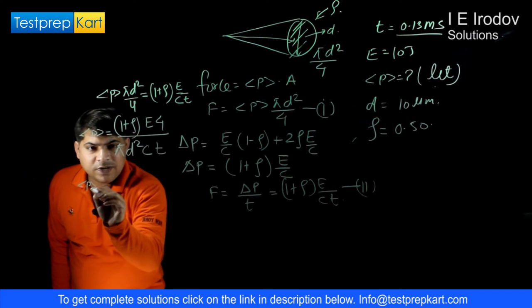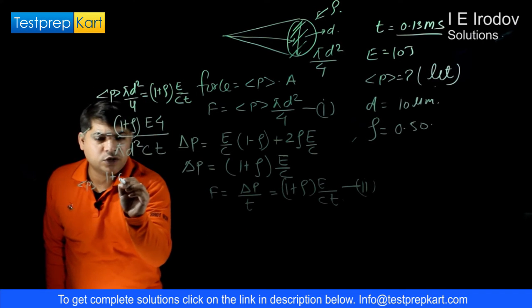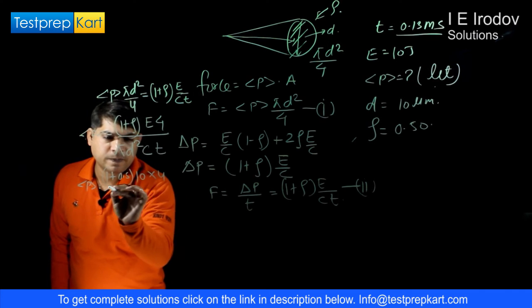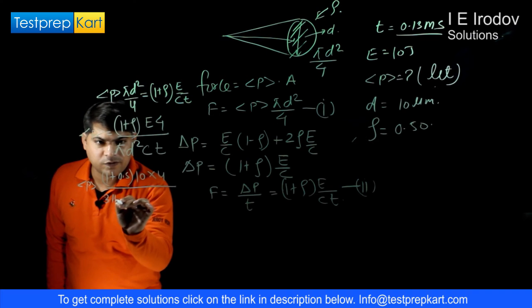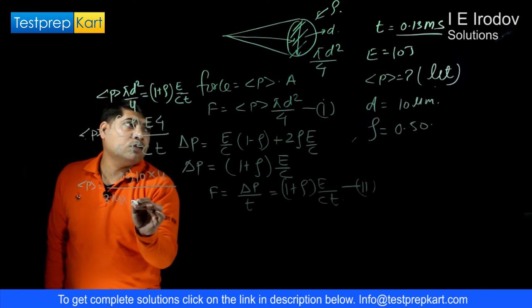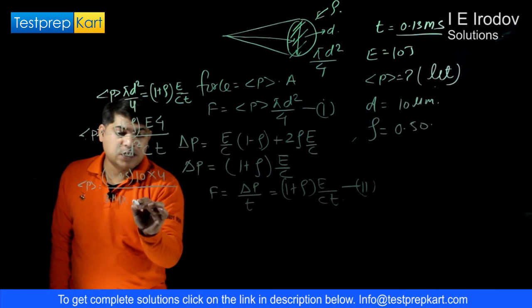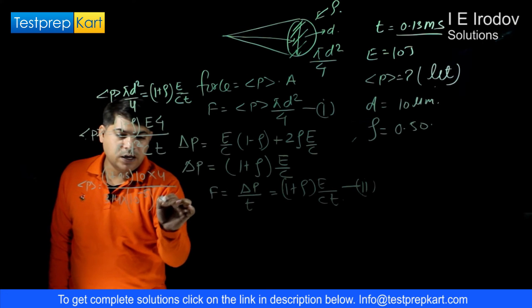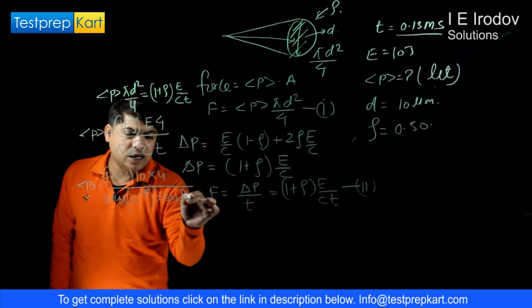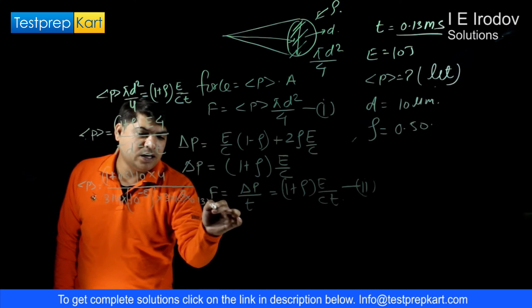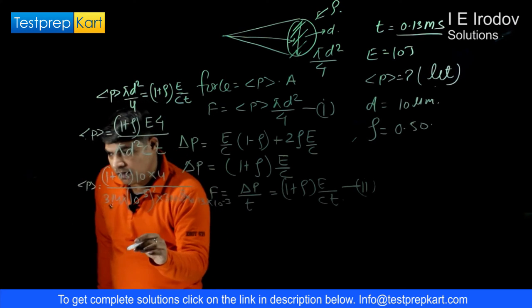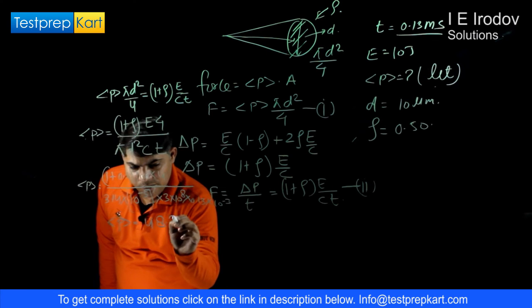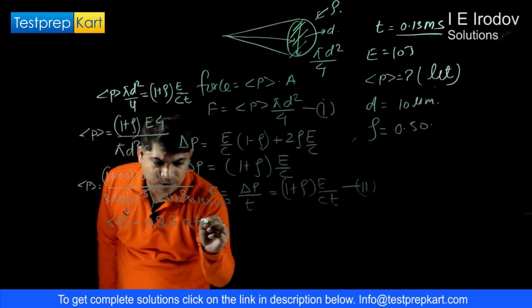From there we can write 1 plus rho is 0.5, energy is 10 joule into 4 divided by 3.14 into 10 micrometer so 10 to power minus 5 whole square into 3 into 10 to power 8 into 0.13 into 10 to power minus 3. So after solving this we will get mean pressure equals 48.3 atmospheric pressure.